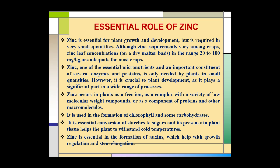Zinc occurs in plants as free ions, as a complex with a variety of low molecular weight compounds, or as a component of proteins and other macromolecules. It is used in the formation of chlorophyll and some carbohydrates. It is essential for the conversion of starch to sugar, and its presence in plant tissues helps the plant withstand cold temperatures. Zinc is also essential for the formation of auxin, which is helpful in growth regulation and stem elongation.